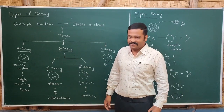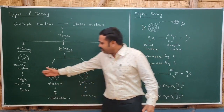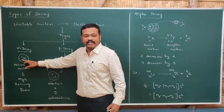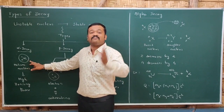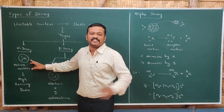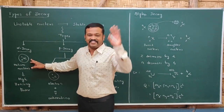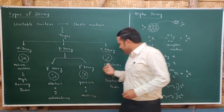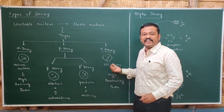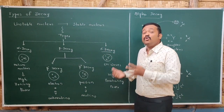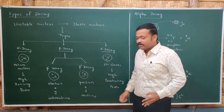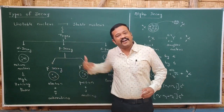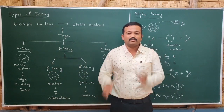If we compare with charge: alpha has more charge, so when alpha passes through a gas it can ionize the gas, giving it high ionizing power. Gamma, since it has no charge, has low ionizing power. And the ionizing power of beta is in between alpha and gamma.